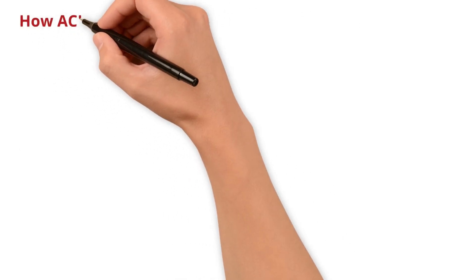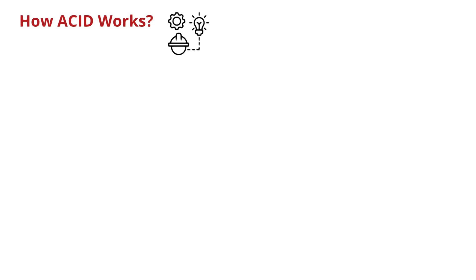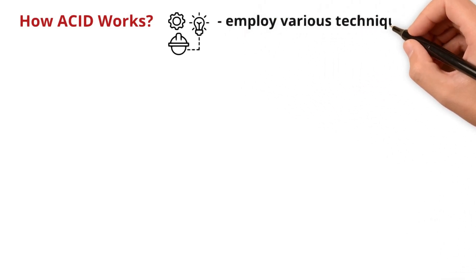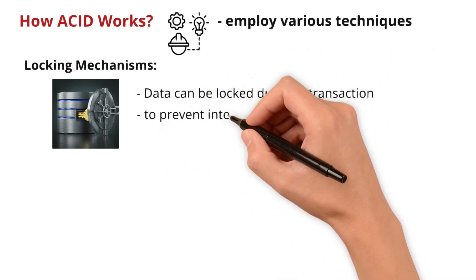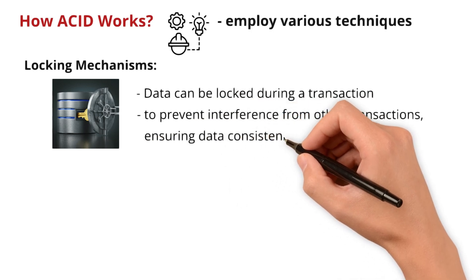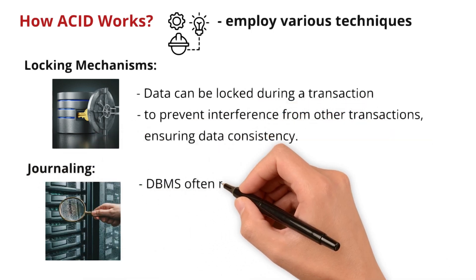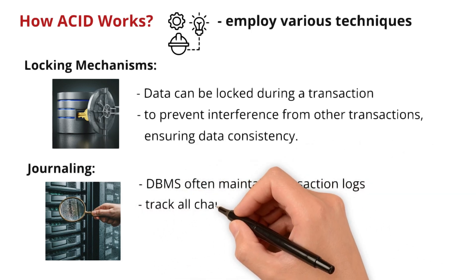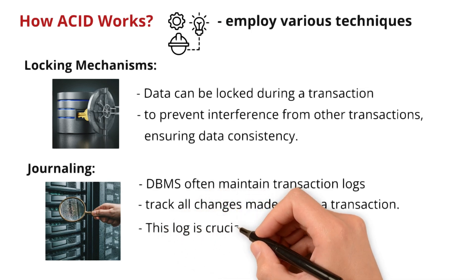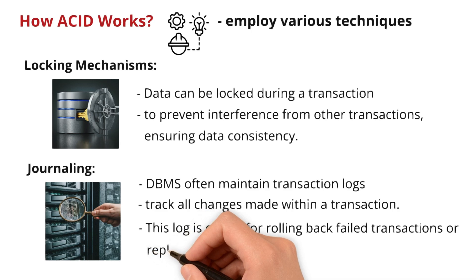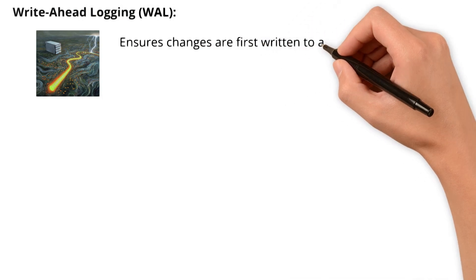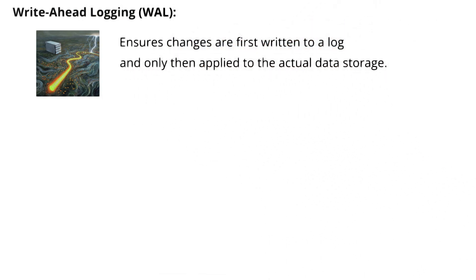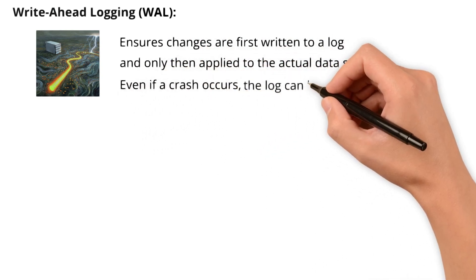Now let's understand how ACID works behind the scenes. Database management systems employ various techniques to implement ACID properties. One is locking mechanisms — data can be locked during a transaction to prevent interference from other transactions, ensuring data consistency. Another is journaling — the DBMS maintains transaction logs tracking all changes, crucial for rolling back failed transactions or replaying changes during recovery. Write-ahead logging ensures changes are first written to a log and only then applied to the actual data storage, so even if a crash occurs, the log can be used to recover the data.